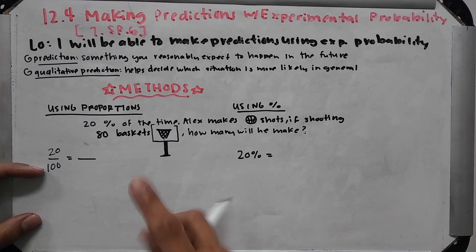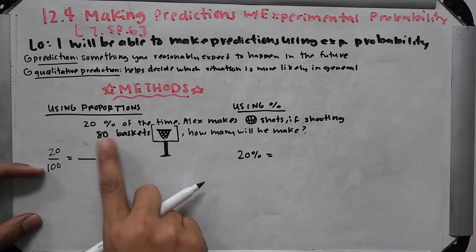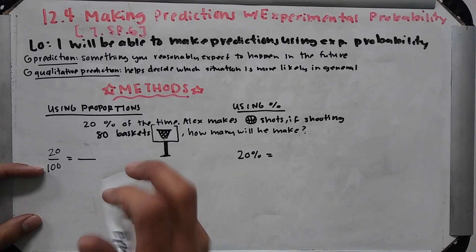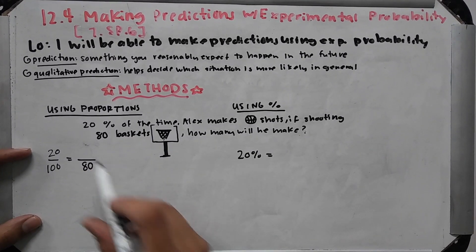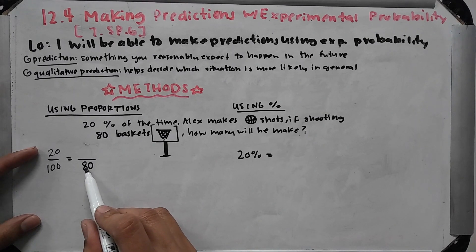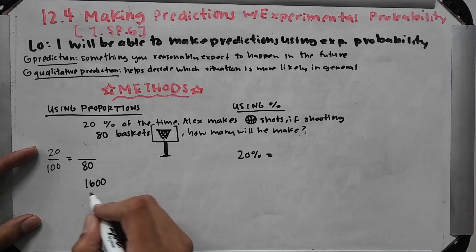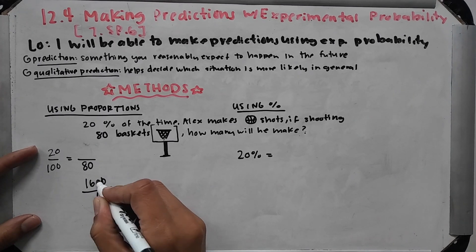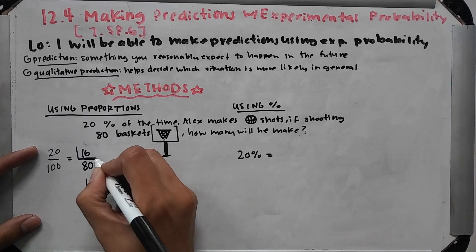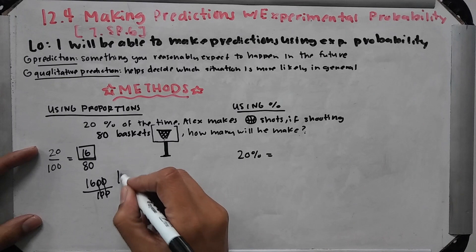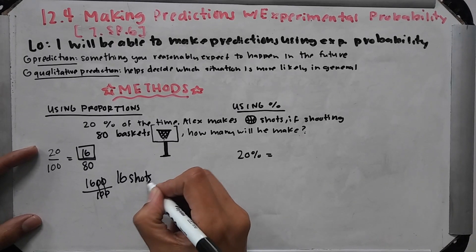And now we want to see out of 80 baskets how many he's gonna make, so out of 80 is gonna be my total. You can use the butterfly method there, so I go 80 times 20, that's 1600, and then I divide that by 100. So that's 16. That means that out of 80 times he's gonna make 16 shots.